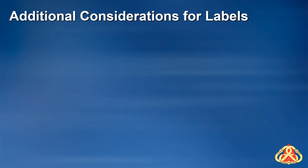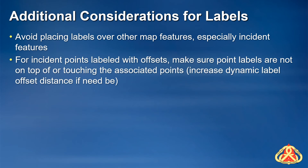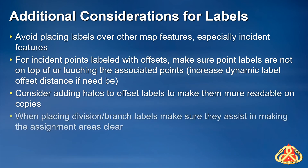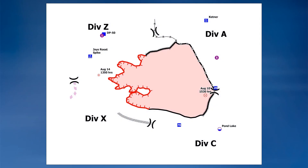Other things a GISS should consider when creating map labels: avoid making labels that overlap or obscure other map features, especially important features such as other incident features or structures. Make sure offset incident point labels aren't touching or overlapping their associated points. Consider adding halos to offset point labels to make them more readable over base data. Place division and branch labels in locations that make the assignment areas clear — this can be especially challenging for multi-page maps. Finally, have your fellow GISS and your SIDL review the maps and map features including labels for accuracy. The more sets of eyes, the better.